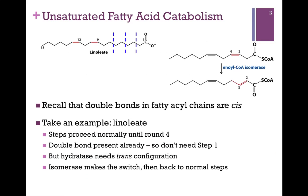Recall that all naturally occurring double bonds in fatty acid chains are in the cis configuration. Let's look at the example of linoleate. It's an 18-carbon unsaturated chain, and the first cis double bond is between carbons 9 and 10. Beta-oxidation is going to proceed normally until we get to round 4.